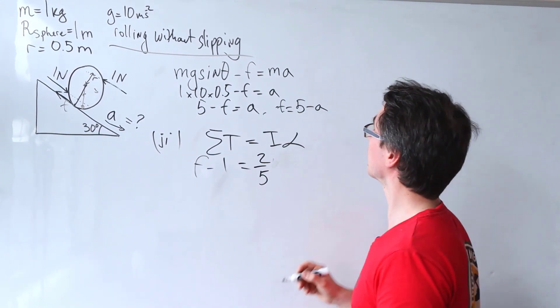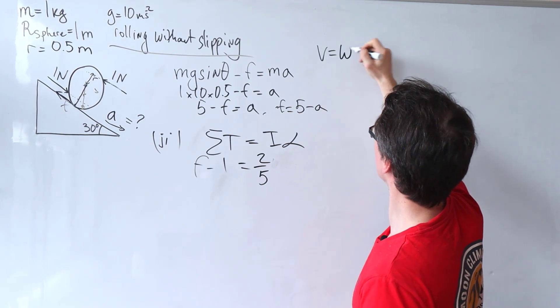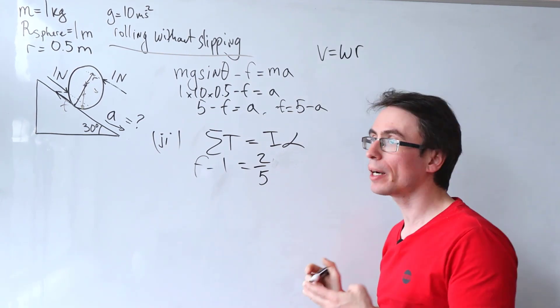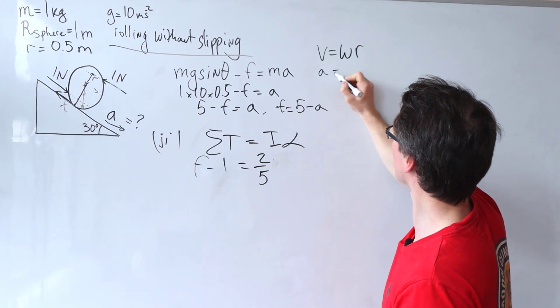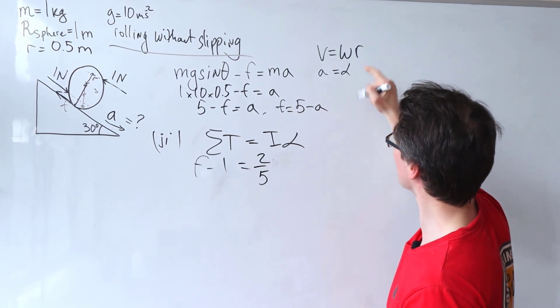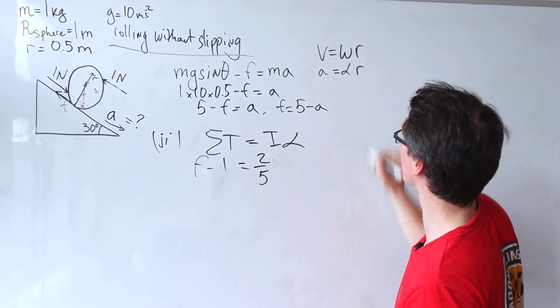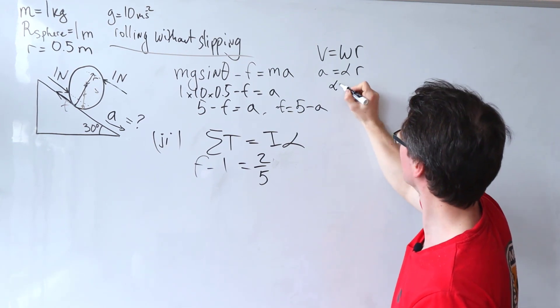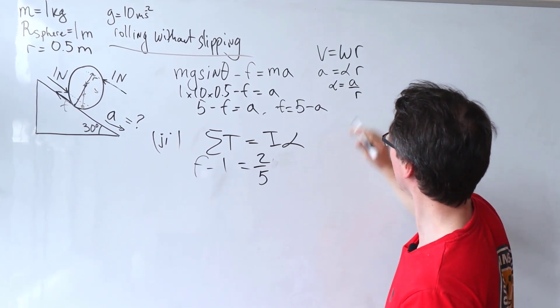Multiply by the angular acceleration, but remember, because V is equal to omega r, you can also extend this for the tangential acceleration and its relationship to the angular acceleration, meaning that the angular acceleration is just a over r.